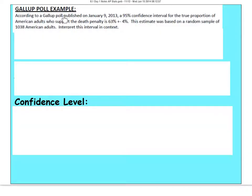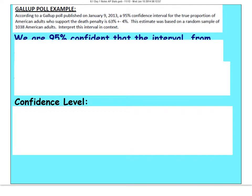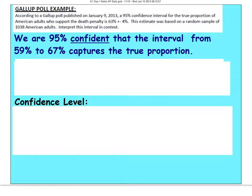Now, here we have the Gallup poll published back in January of 2013. A 95% confidence interval for the true proportion of American adults who support the death penalty. They said it was 63% plus or minus 4%. This estimate was based on a random sample of 1,038 American adults. To interpret this interval, we would say, We are 95% confident that the interval from 59% to 67% captures the true proportion.